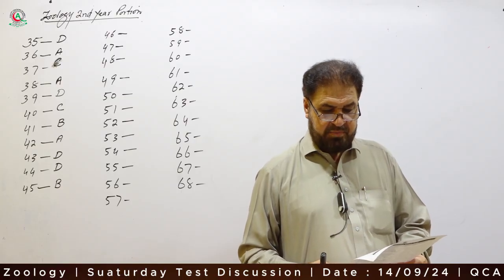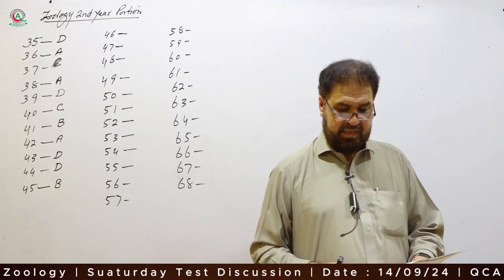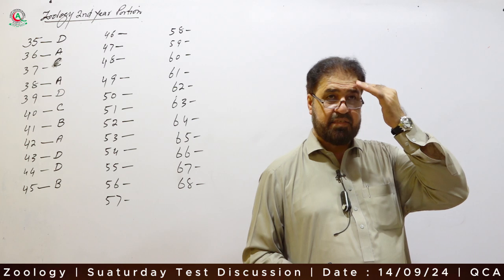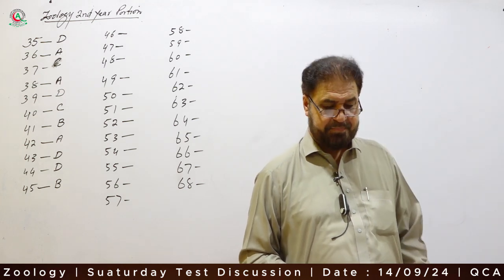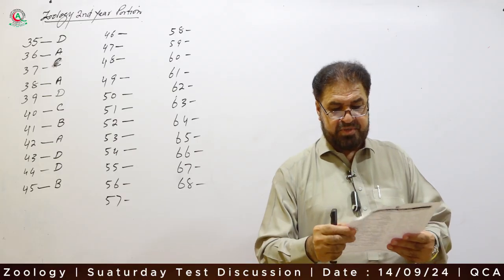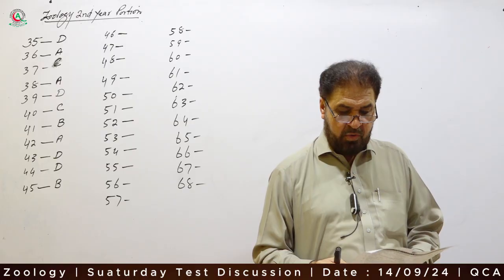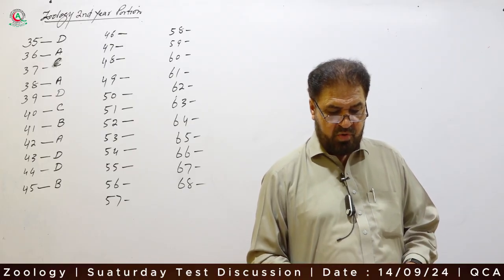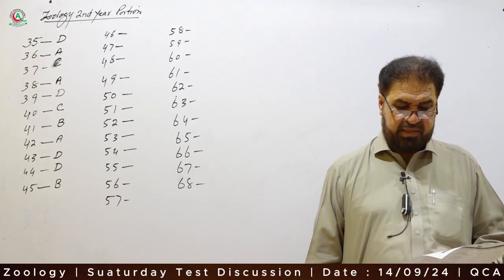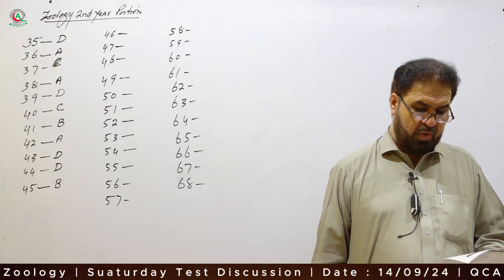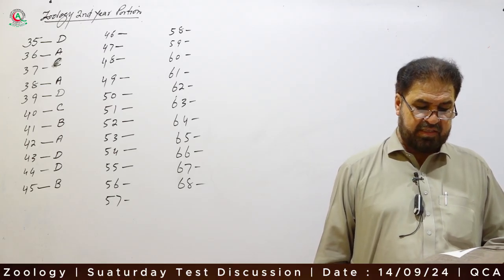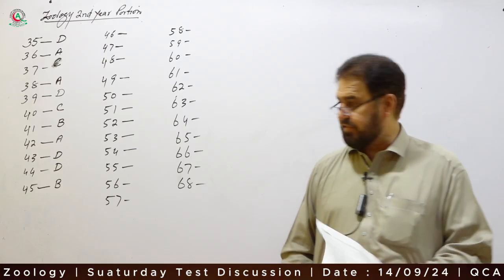Question 46: Which one of the following is a neuroglial cell? Our nervous system consists of two types of cells: neuroglial cells and neurons. Neurons are specialized for conduction of nerve impulses, and neuroglial cells are supporting cells. Schwann cells are the correct answer — they are neuroglial cells. Option C is correct.